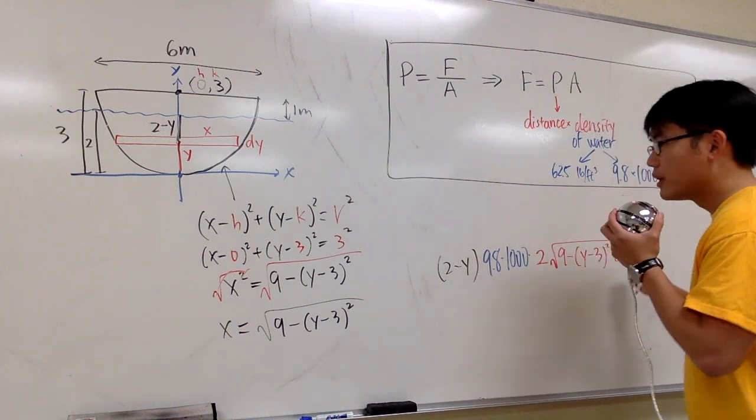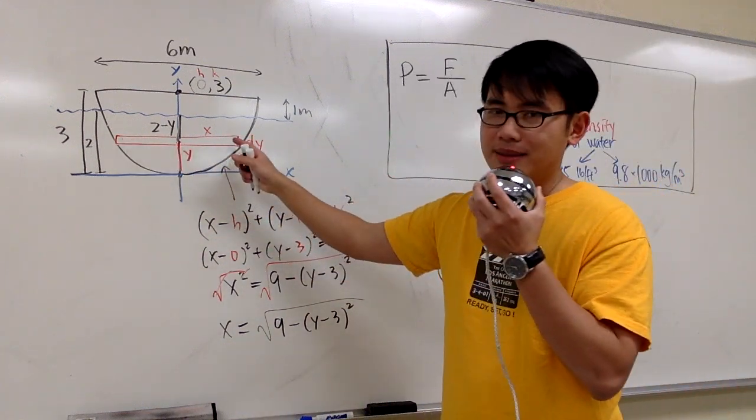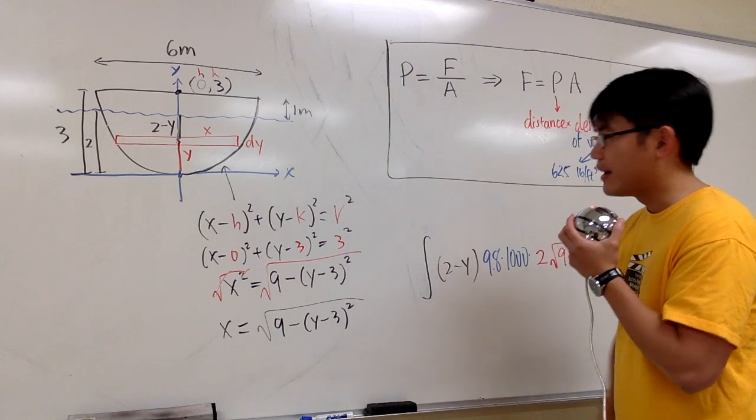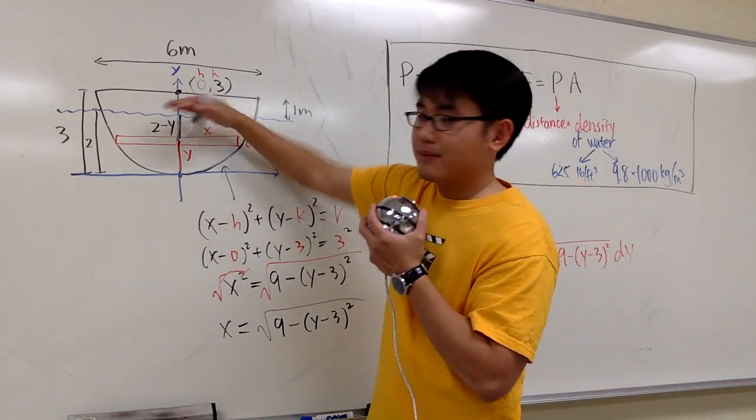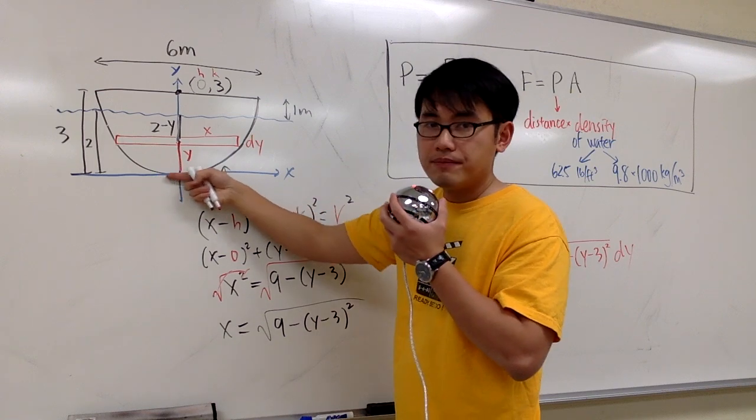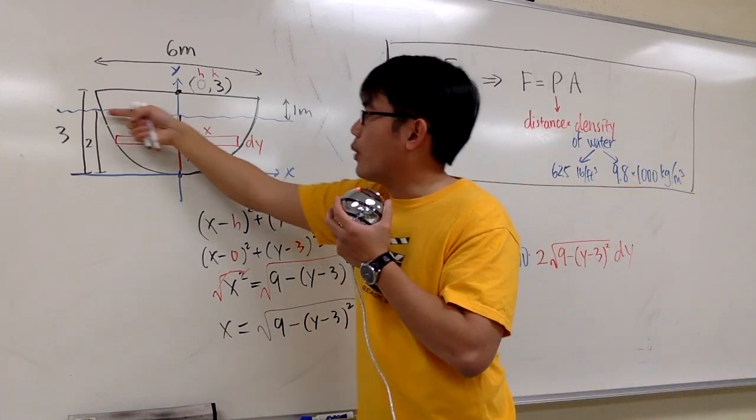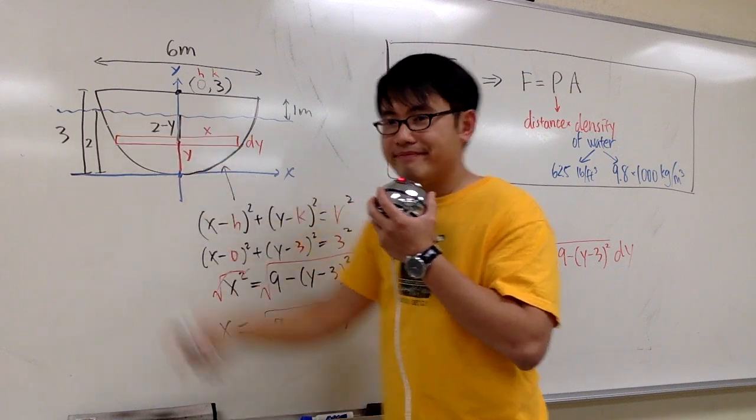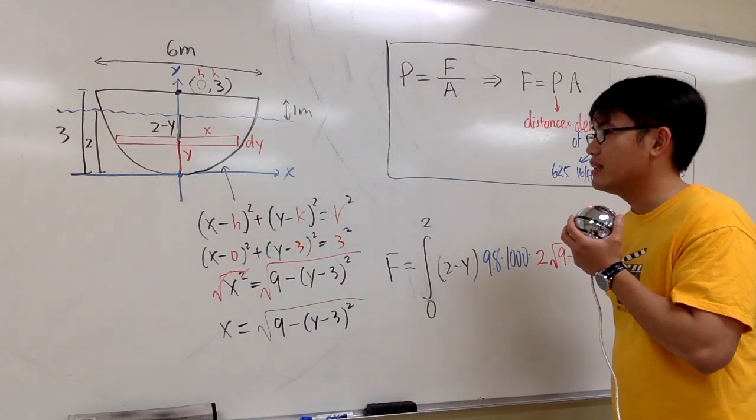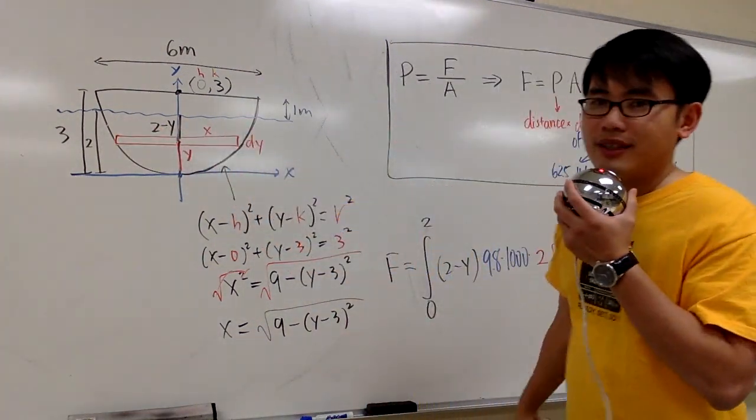This right here will give you the hydrostatic force that's acting on this small rectangle. And now we just have to do integration to find out the whole thing. And this starts off with y is equal to 0, up to when y is equal to 2. So, and altogether, this will give you the hydrostatic force that's acting on this portion that's underneath the water.